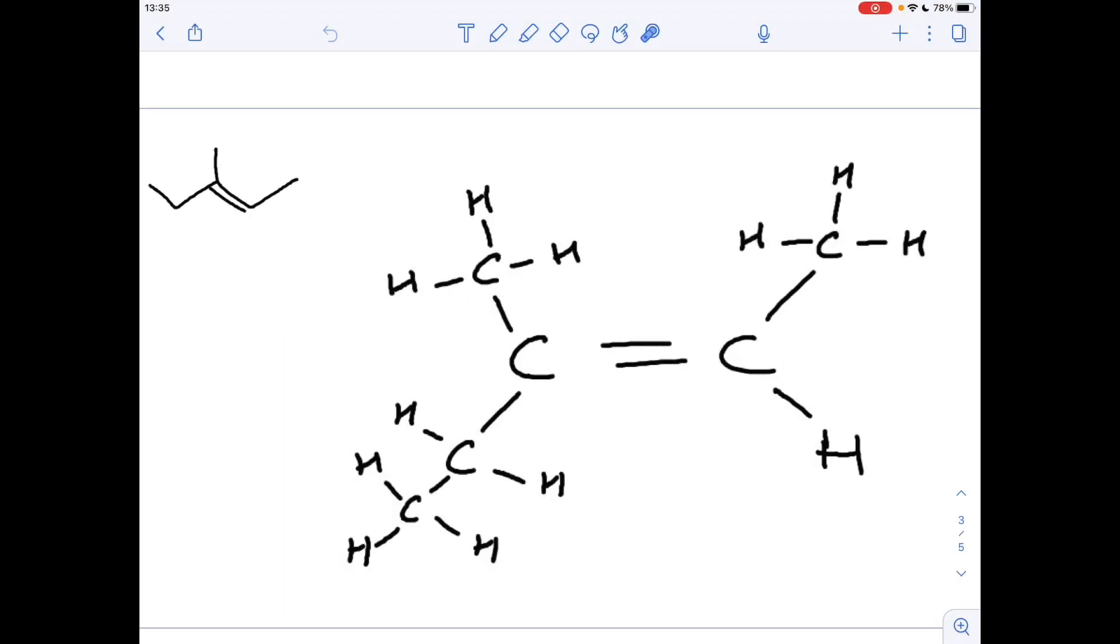So the first one, what I've done is I've drawn the displayed formula from the skeletal formula. I think it's much easier to visualize what you've got. And then we just take each carbon of the double bond and establish priority.